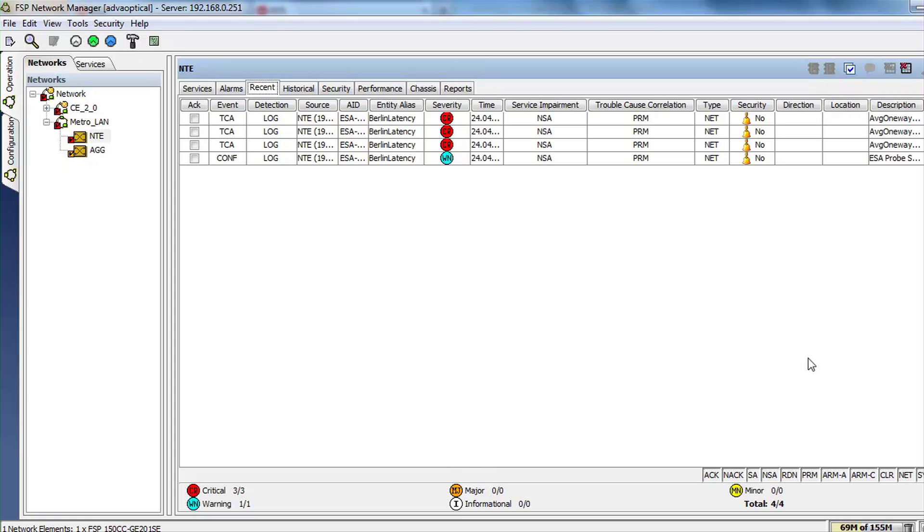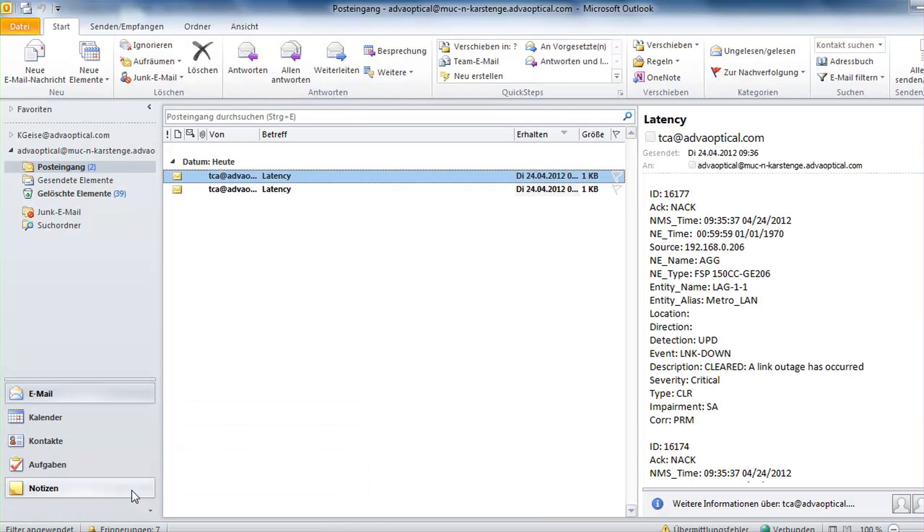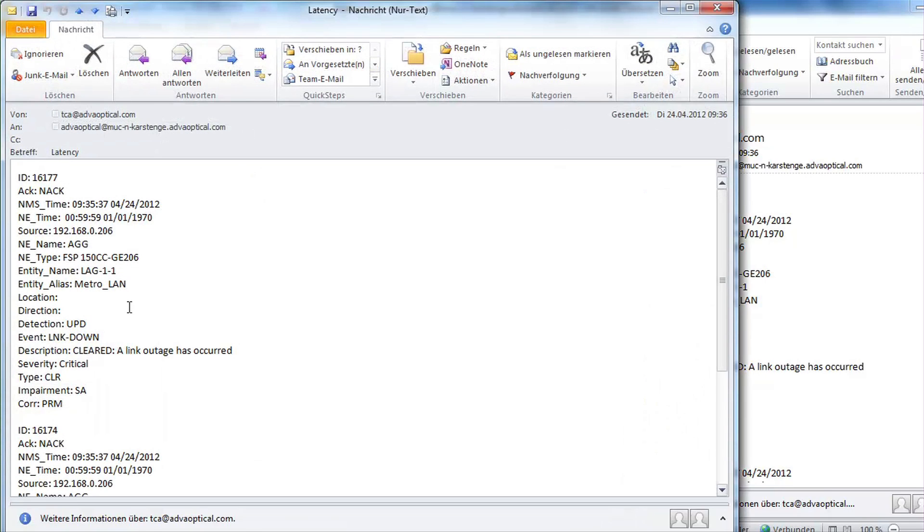You can even set threshold alarms that warn you of issues over email. No matter where you are, you can be notified of any problems. Let me show you how easy this is to set up. Should the alarm be triggered? Here's what the email looks like when it arrives in your inbox.